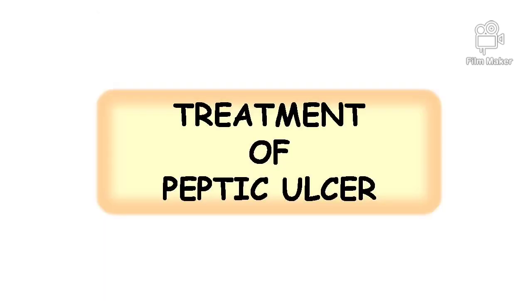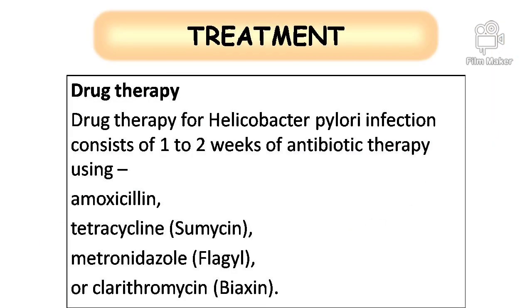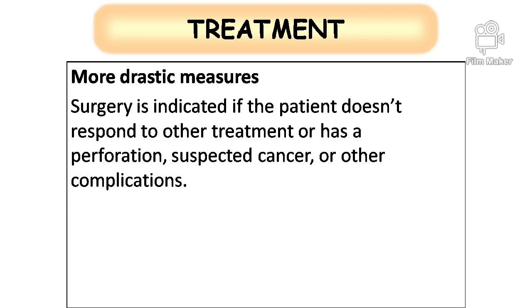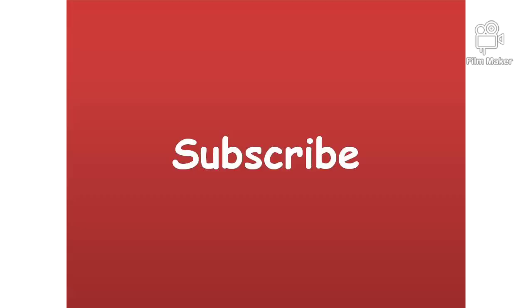Treatment of peptic ulcer: drug therapy for Helicobacter pylori infection consists of one to two weeks of antibiotic therapy using amoxicillin, tetracycline, metronidazole, or clarithromycin. Surgery is indicated if the patient does not respond to other treatment or has a perforation, suspected cancer, or other complications. That's it for peptic ulcer — for more videos, subscribe to my channel.